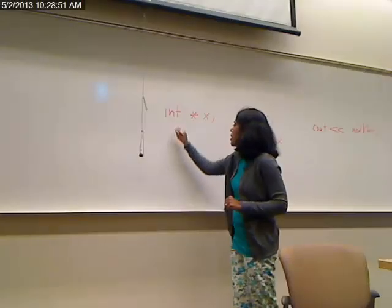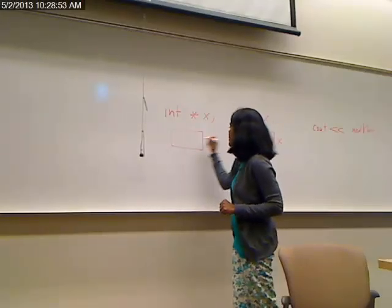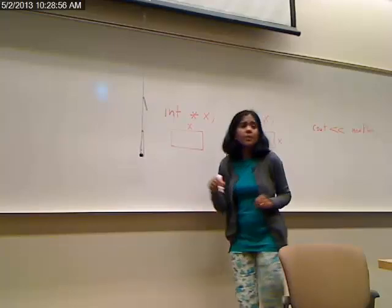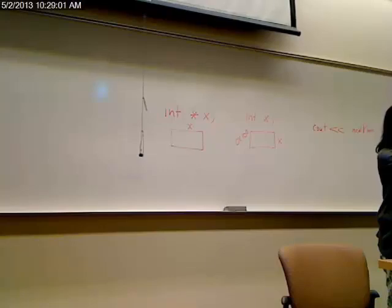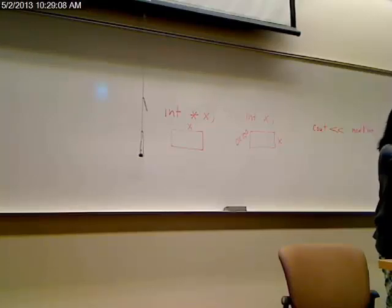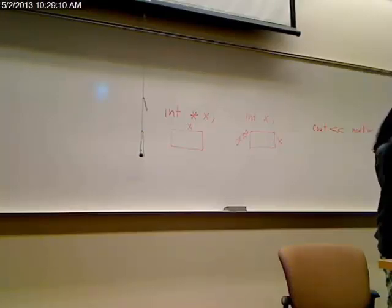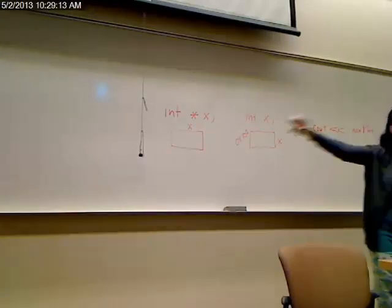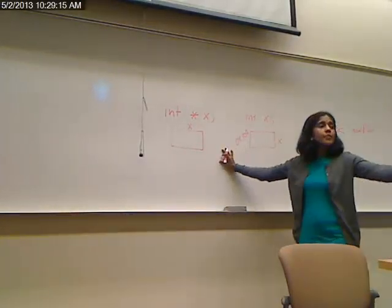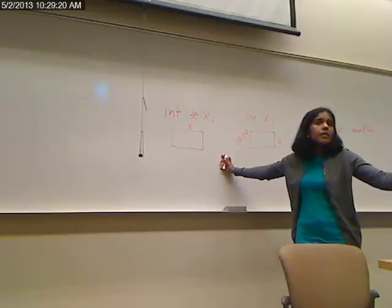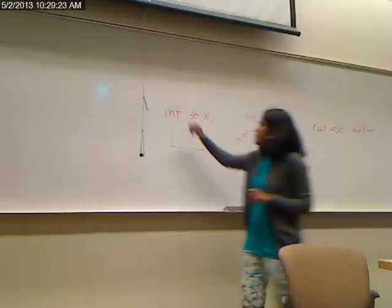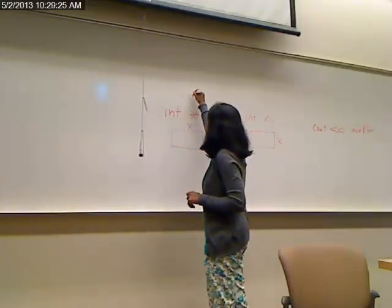Likewise, when you say int star x, all it does is it allocates memory for this pointer. So how much memory does it allocate for the pointer? What is the pointer going to hold? A memory location. An address is usually as long as the number of bits on your computer. So if you have 32 bits, the address is as long as 32 bits. So how much memory is going to get allocated on this computer for a pointer? 32 bits because that's what it has. That's about 4 bytes.